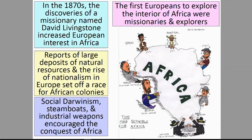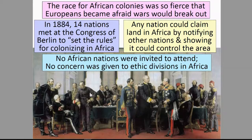Social Darwinism, steamboats, and industrial weapons encouraged the conquest of Africa. The race for African colonies was so fierce that Europeans became afraid wars would break out. In 1884, 14 nations met at the Congress of Berlin to set the rules for colonizing in Africa.